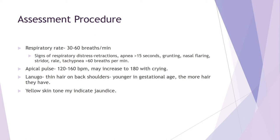Apical pulse is 120 to 160; if they're crying it can go up to 180. Lanugo — the thin hair on their backs and shoulders. Yellow skin tone indicates possible jaundice, meaning they're having difficulty clearing bilirubin from their blood. Increased feedings help; if more intense, phototherapy is required. Jaundice is a really common problem in newborns and something to watch closely in the hospital.